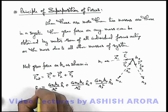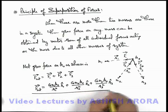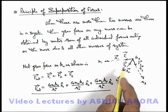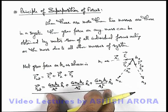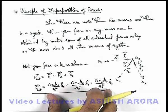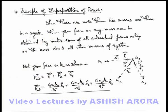This is the way how we find the net force acting on the body due to all other bodies present in the surrounding. This phenomenon of finding out the vector sum of all the forces is called principle of superposition of forces.